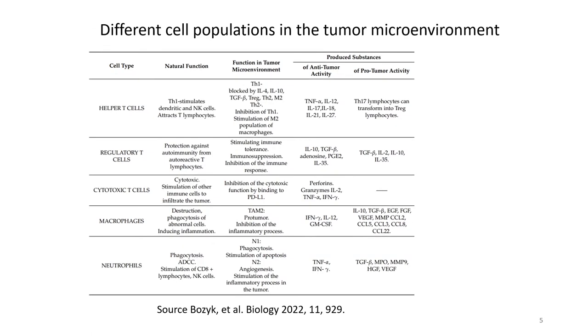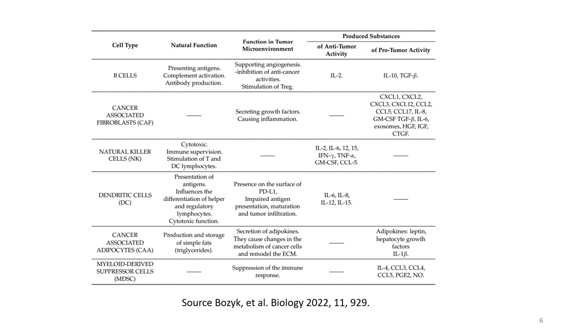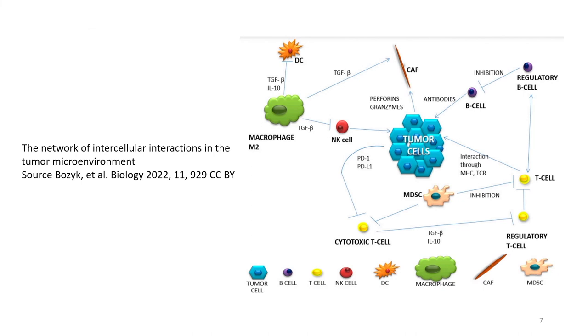The various cells involved in the tumor microenvironment have some natural functions when there is no cancer in the patient, but when cancer occurs they may have altered or novel functions. This is the network of intercellular interactions: these various cells work in interaction with one another in the tumor microenvironment, and this interaction ultimately determines the progress of the disease or the arrest of the disease.